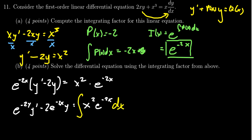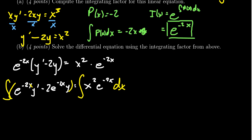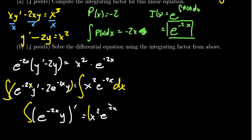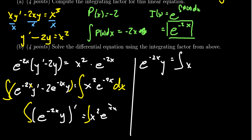We integrate both sides. Because of the integrating factor, the left hand side simplifies to be a derivative. It simplifies to e to the negative 2x times y prime, which equals x squared e to the negative 2x. Integrating both sides, the left hand side simplifies very nicely — it always simplifies to be the integrating factor times y, giving us e to the negative 2x times y. The right hand side takes more effort: we must integrate x squared e to the negative 2x dx.